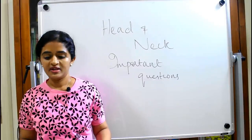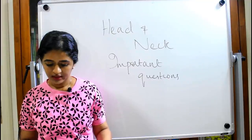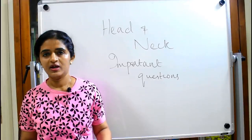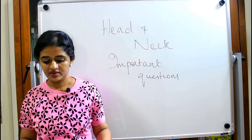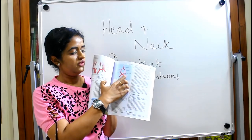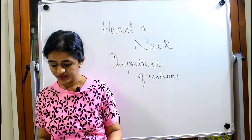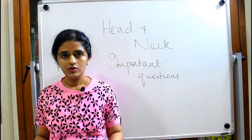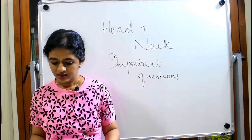Coming to the chapter on blood supply and lymphatic drainage of the head and neck. You can expect a short note on the vertebral artery — how it takes its origin, how it travels along the neck, and how it enters the cranial cavity. Subclavian steal syndrome associated with it is a favorite question. The external carotid artery and its branches — knowing each of the different branches is also a very important question.